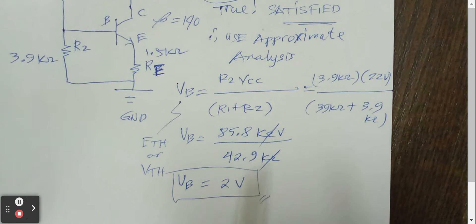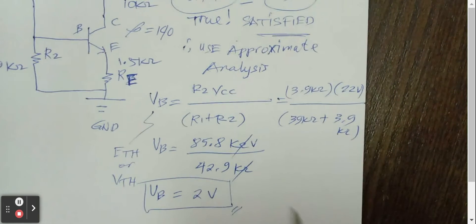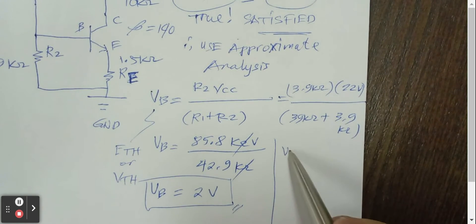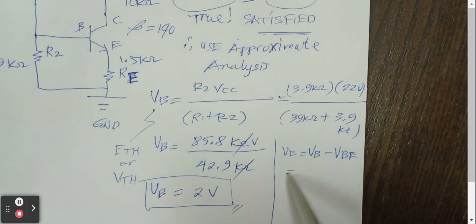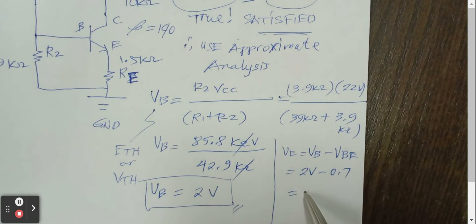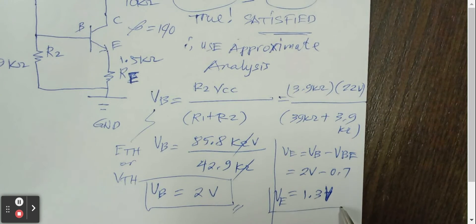And after that, we will be calculating the Ve, which is equal to Vb minus Vbe. So we will be getting here 2 volts minus 0.7. And we'll get an answer of 1.3 volts.